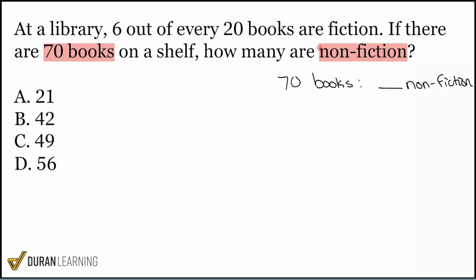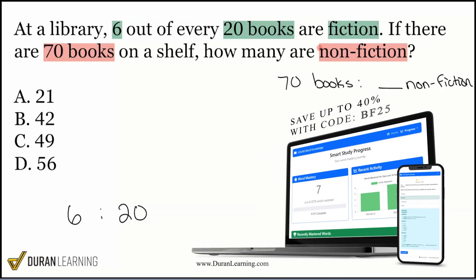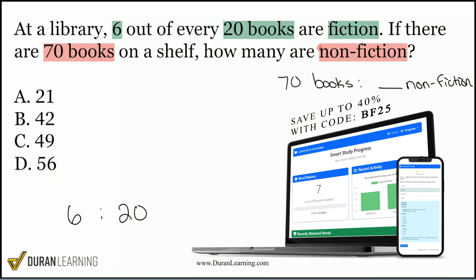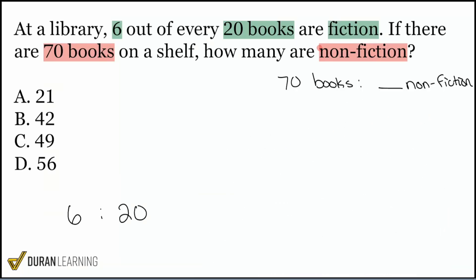Next up, we're going to read the information. At a library, six out of every 20 books are fiction. Read that again: six out of every 20 books are fiction. What does that mean? That means I have six compared with 20. You have to understand what each of the six and 20 represent. If we say six out of every 20 are fiction, that means six is the number of fiction books, 20 is the total number.